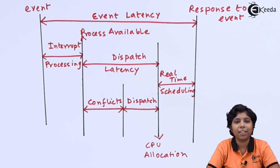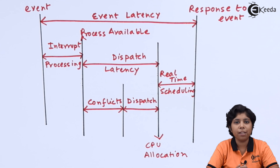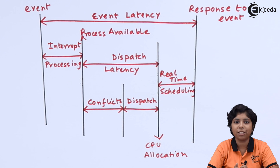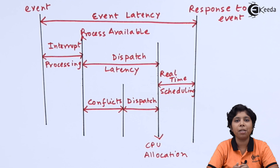The most effective technique for minimizing both dispatch latency and interrupt latency is to use a preemptive kernel. There are several ways to minimize these latencies, and disabling dispatch latency leads to much longer waiting periods. For example, Solaris has a waiting time of 100 milliseconds when dispatch latency is disabled, but when it is enabled, the waiting time becomes less than a millisecond. In this way, minimizing latency is key to effective real-time CPU scheduling.